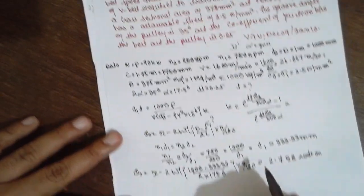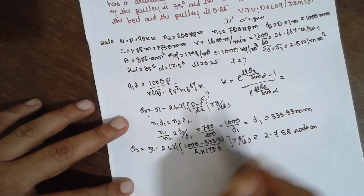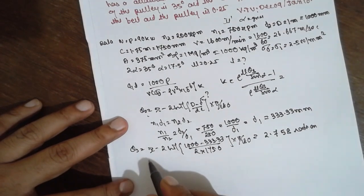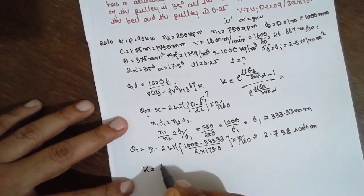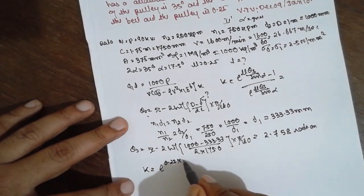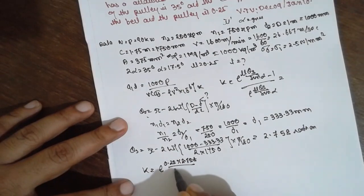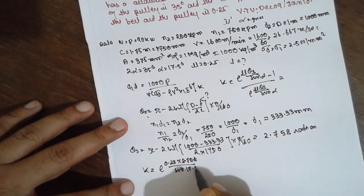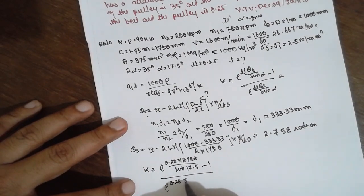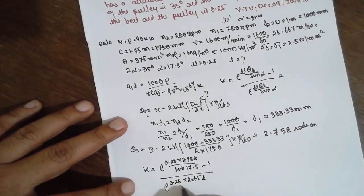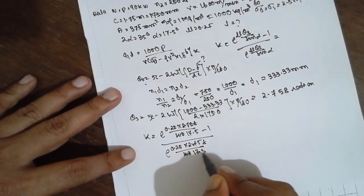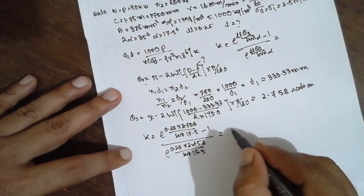Next, after getting this one, I will substitute here. K is equal to e raised to mu (0.25) into theta s (2.758) divided by sin alpha (17.5) minus 1 divided by e raised to 0.25 into 2.758 divided by sin 17.5. The answer for this one is 0.899.